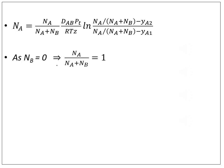As NB equals zero, NA/(NA+NB) reduces to 1. The equation then simplifies to: NA = (DAB·P·T)/(R·T·Z) × ln[(1-yA2)/(1-yA1)].